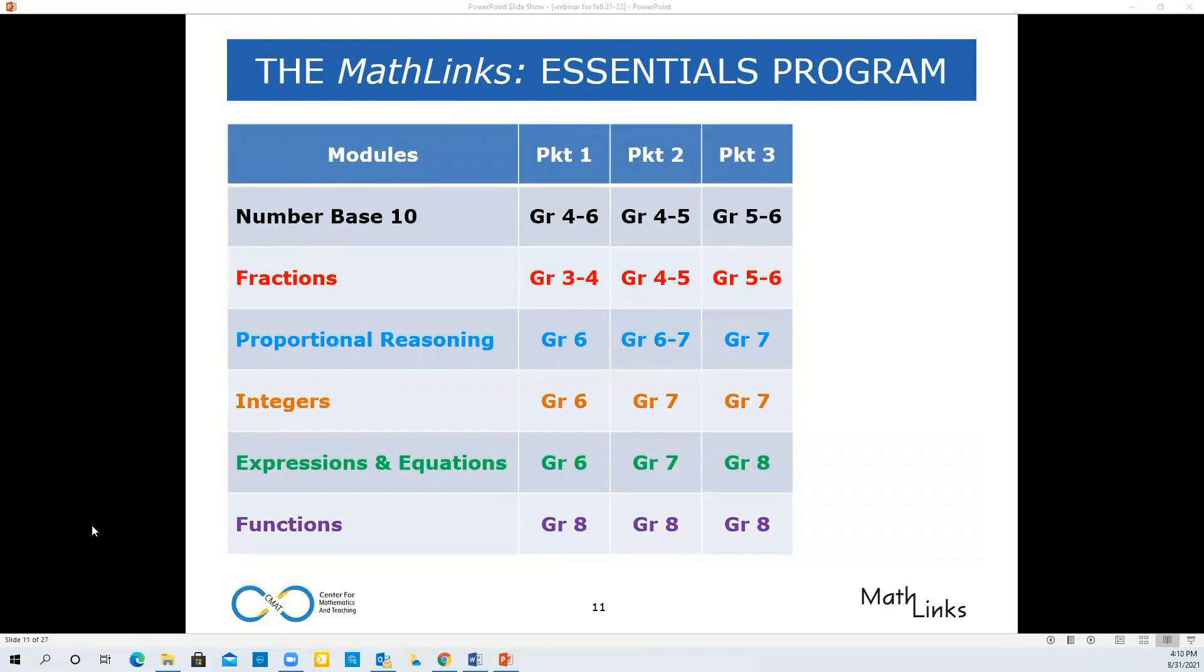MathLinks Essentials consists of these six modules you see here. Each module has three consumable or digital student packets, and each of these student packets takes about 10 typical class periods to complete. Packets from these modules can be flexibly combined, so you can create the plan that your students need to catch up. And with just a few packets, you can teach the major work of the grade level and review work that students may have missed to help get them back on track.